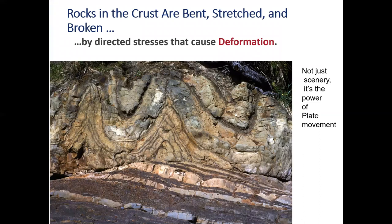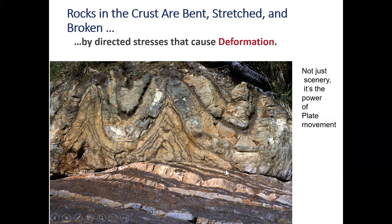What you're looking at here are folds — the rocks are folded. This only happens at depth where it gets warmer, making rocks more malleable, like silly putty. When compressional forces are at work we get these folds. The different parts of the fold have names. The other thing you can see here is a fault — these rocks have been shoved over those rocks, and there's the fault line.